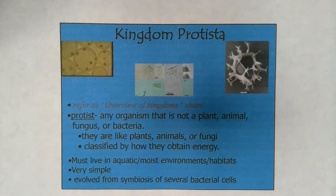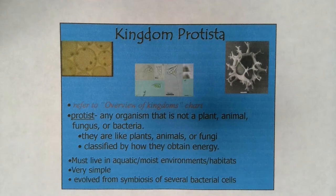If you refer back to your overview of the kingdoms chart, protists are eukaryotic. They are mostly unicellular, some are multicellular. They can be autotrophic or heterotrophic, and some are actually both. They can only live in aquatic or really wet environments. Some have a cell wall, some don't.